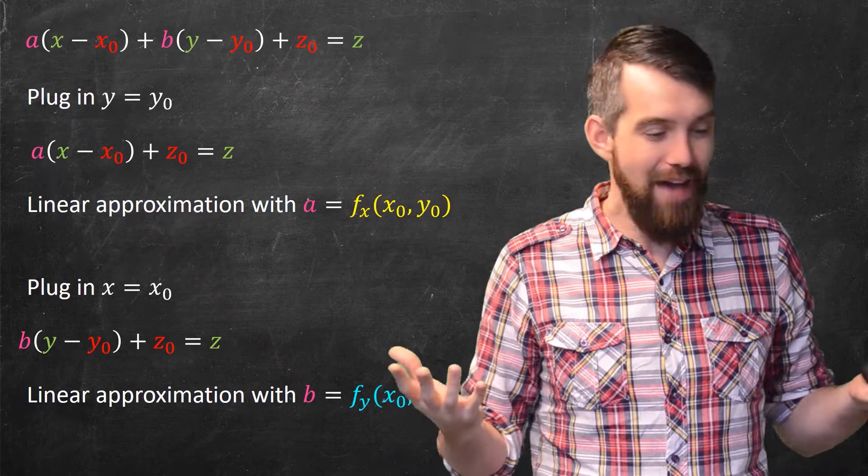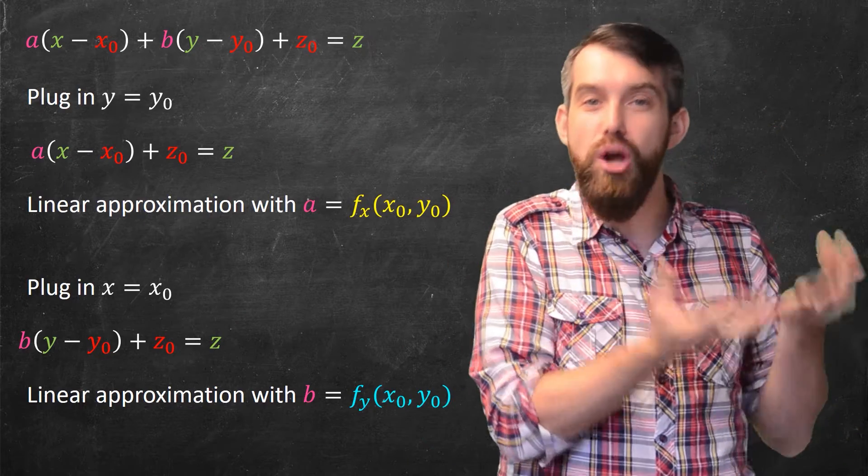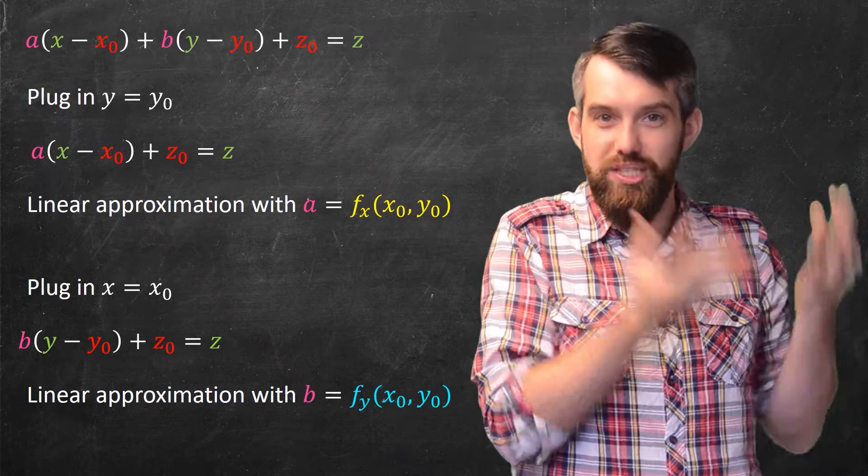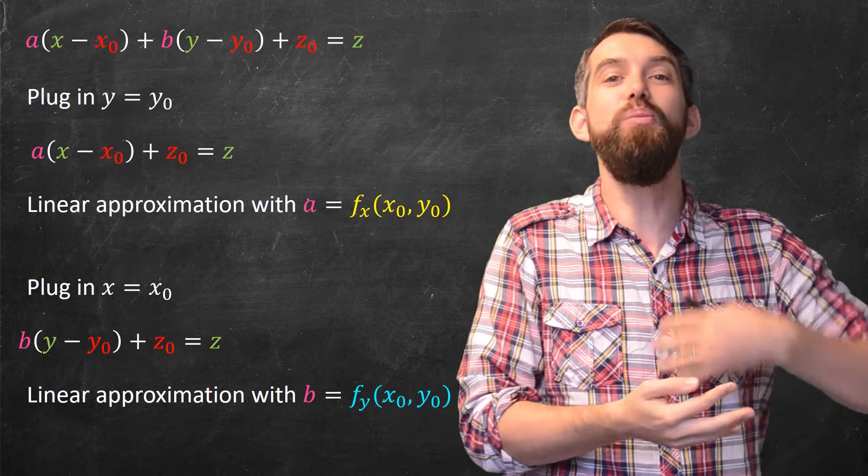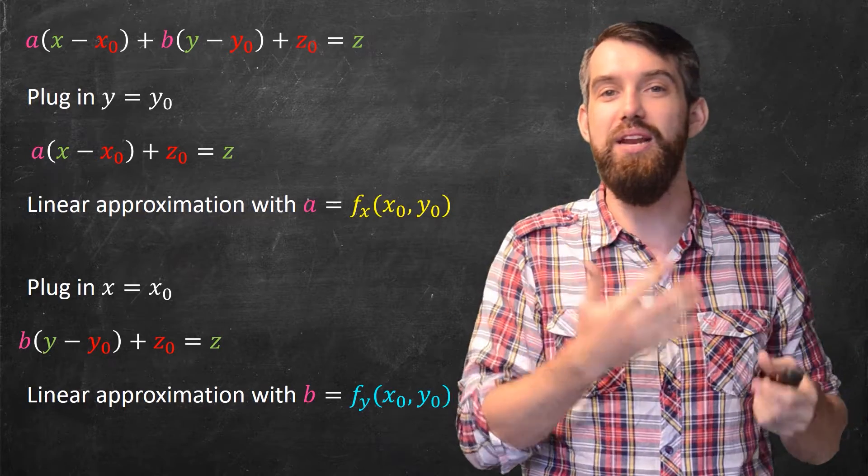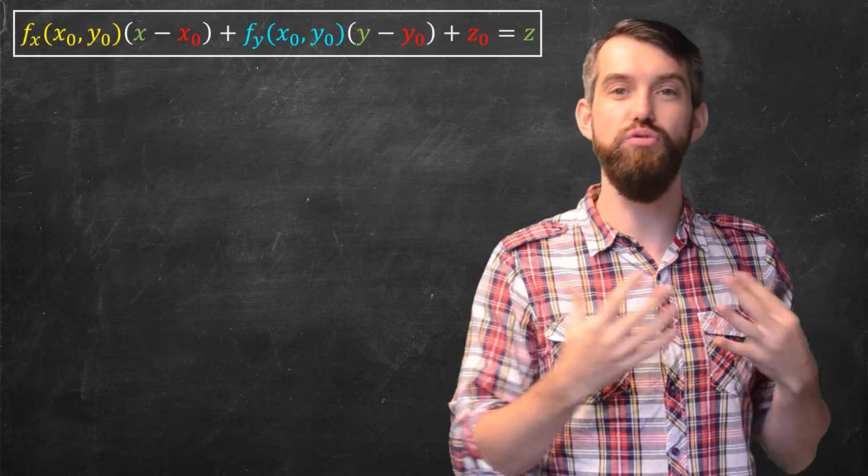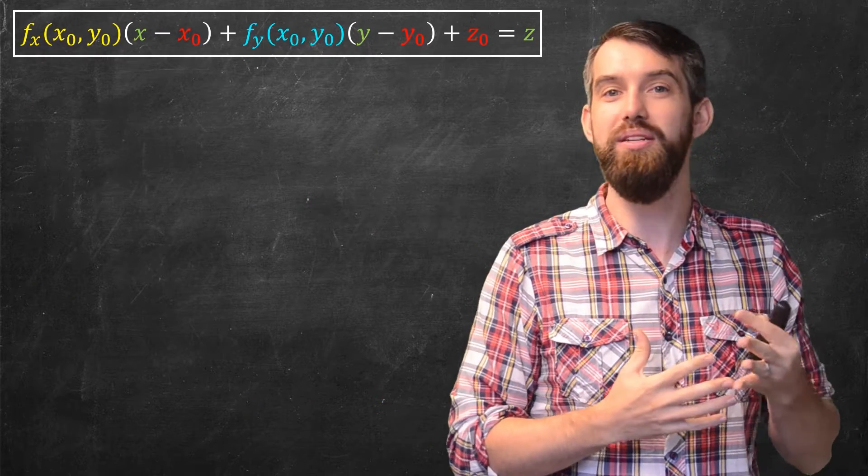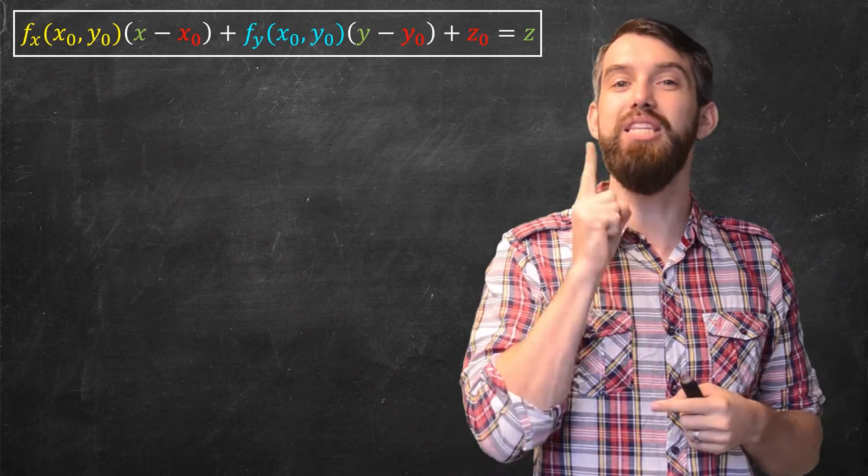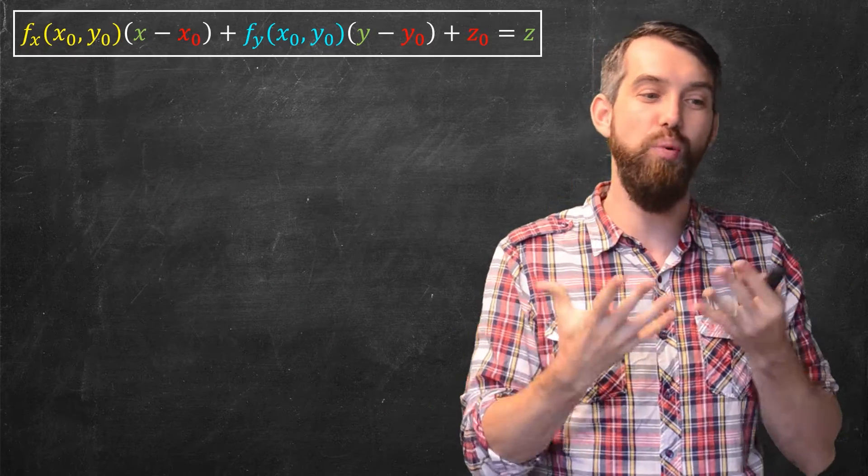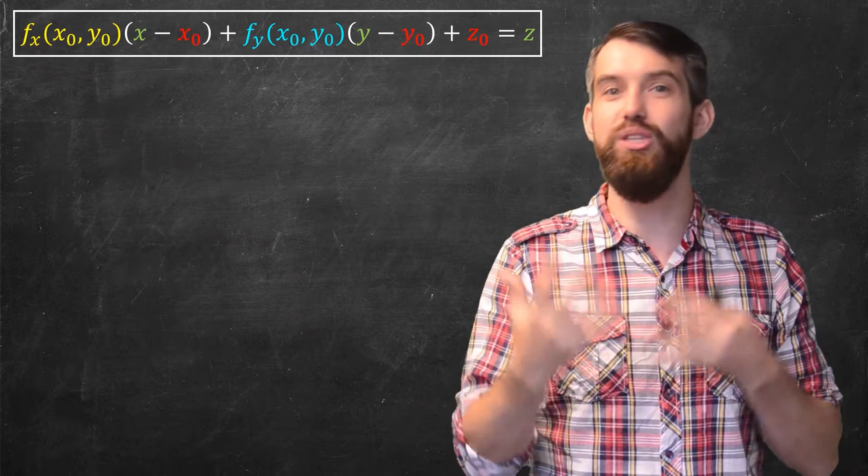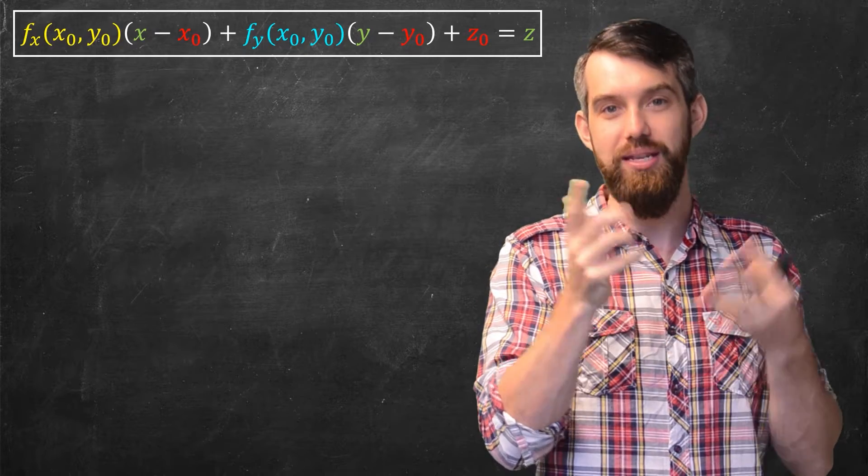So there we have it. We have inherited the notion of a good approximation from single variable calculus to determine the a and the b that we need in multivariable calculus. Putting it all together, I can get the equation that the partial derivative with respect to x at our point times x minus x0 plus the partial derivative with respect to y at our point x0 y0 times the y minus y0 plus z0 is equal to z.